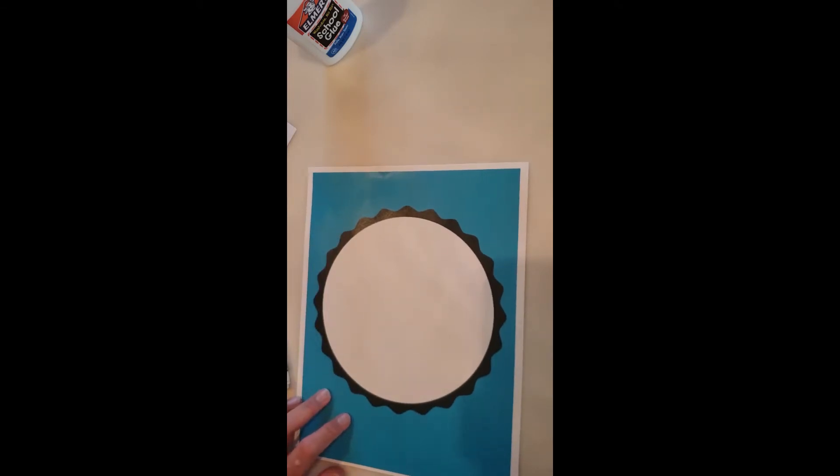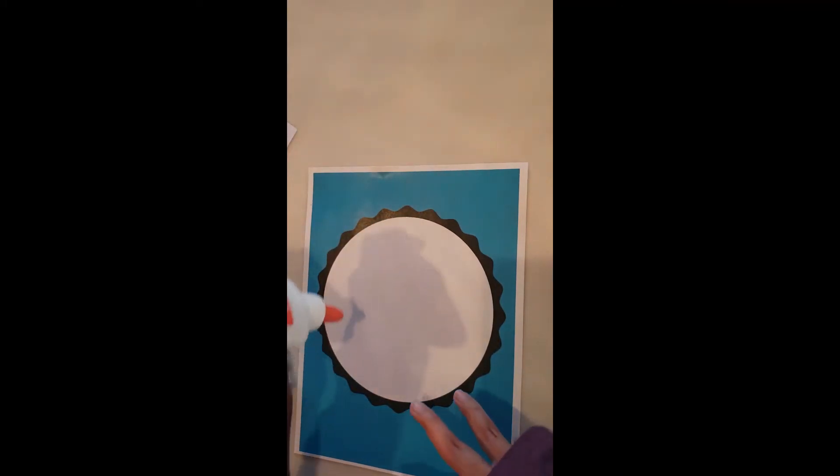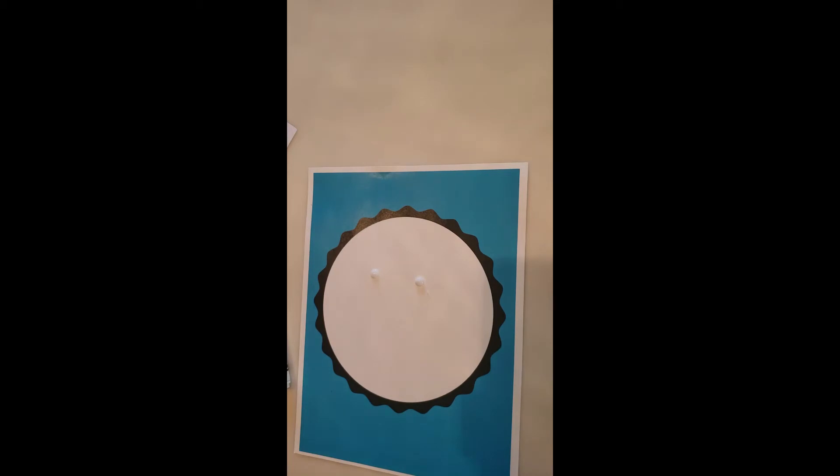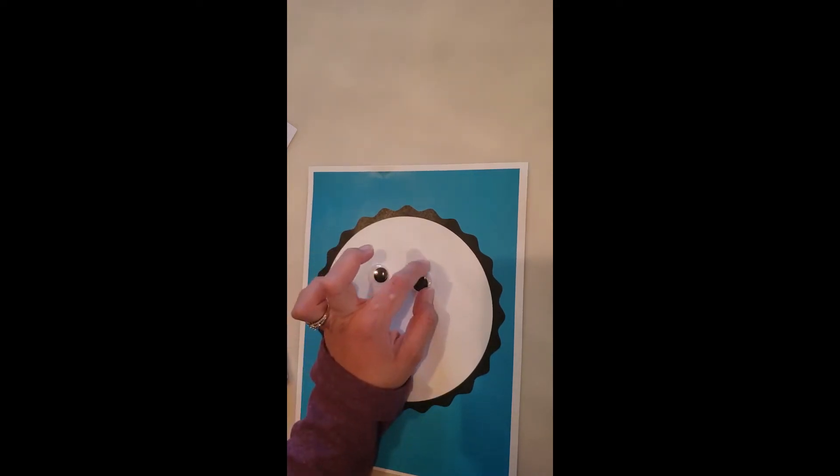Okay, so first we are going to glue on his eyes. You're going to add a little glue on the face, grab your googly eyes. Sometimes you have to move around your googly eyes so that way the eyes are where you want them to be.